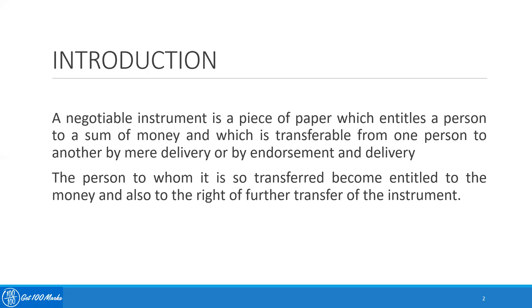So I am the drawer of the check, that is the person who creates the check. I can transfer it to the person called A, who will be the drawee or the person who is going to get the proceeds of the check, either by delivery or by endorsement. Endorsement is the process where I sign behind the instrument and then deliver. So when I am either delivering or endorsing and delivering the particular negotiable instrument to the person called A, then that person A is now becoming entitled to the money against the check.